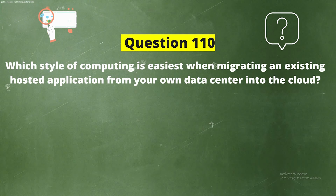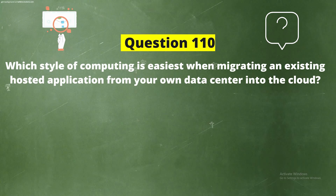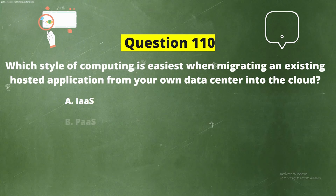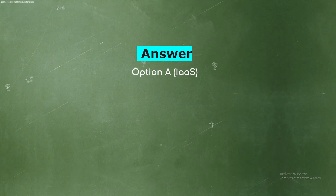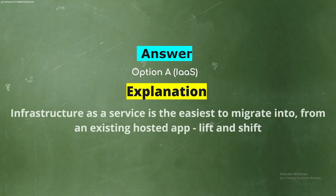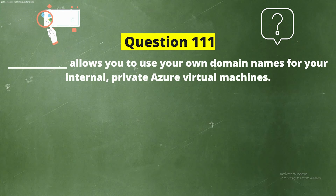Question 110: Which style of computing is easiest when migrating an existing hosted application from your own data center into the cloud? The options are IaaS, PaaS, FaaS, or Serverless. The correct answer is Option A: IaaS. Infrastructure as a Service is the easiest to migrate into from an existing hosted application — a lift and shift approach.